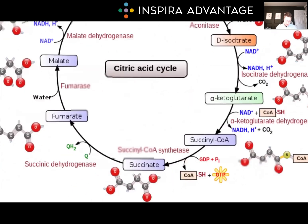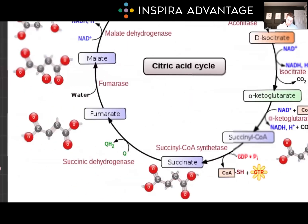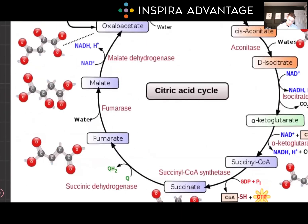After succinyl-CoA, we continue along the cycle making fumarate — nothing critical to understand there. Fumarate then turns to malate, and malate to oxaloacetate. Here we have malate dehydrogenase, so we're making another NADH.